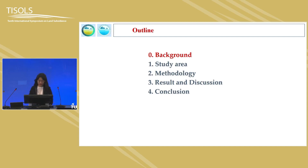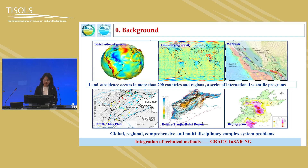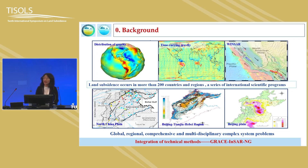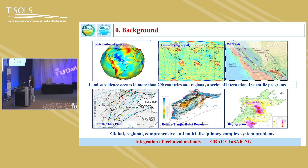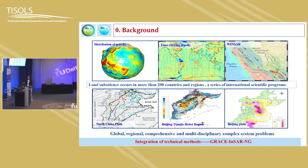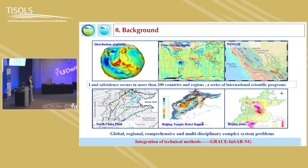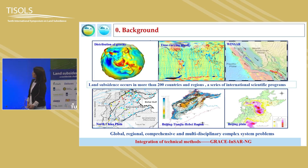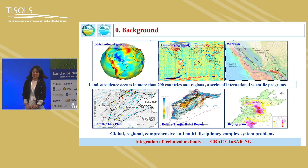Let's see the background of land subsidence in Beijing. We all know land subsidence occurs in more than 200 countries and regions, and it has become a series of international scientific programs. Land subsidence has become a global, regional, and comprehensive complex system problem, especially in Beijing, Tianjin, and Hebei region. This area is one of the world's largest subsidence funnels, superposed with the world's largest diversion project, the South-to-North Water Diversion project. It is essential to research land subsidence in Beijing.